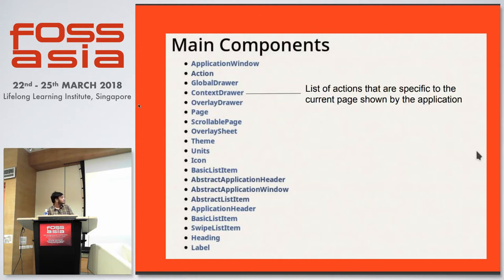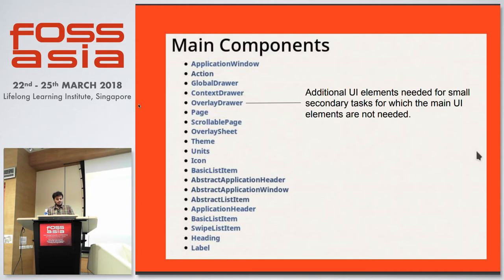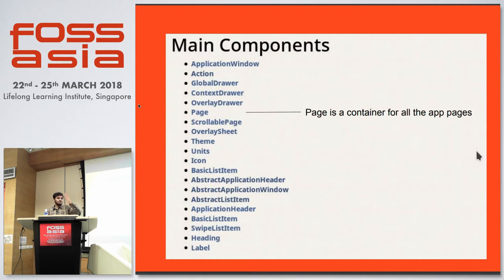There's also a Context Drawer. Once you move to a specific page, you want to show additional options to the user. The context drawer gives you some screen space that can come in and out, allowing you to list actions. There's also an Overlay Drawer — another UI element that comes up on top of your main screen for cases where you don't want to navigate to an entirely new page but just want to put some data in a new screen space.